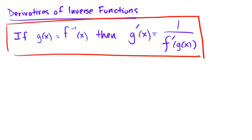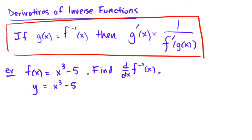Let's take a look at an example of this. An example has our function f of x is equal to x cubed minus 5, and we want to find the derivative of the inverse. So we can take the inverse. I'm going to do this in two different ways. We can take the inverse, and to do that we switch x's and y's, and solve for y.